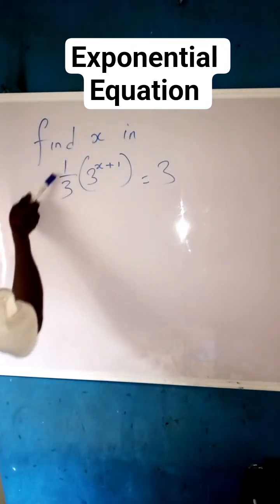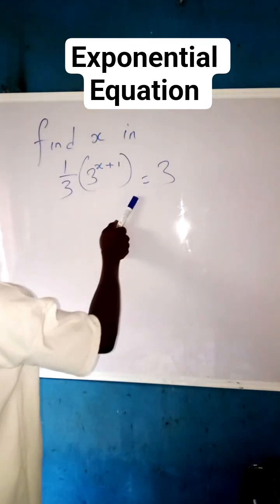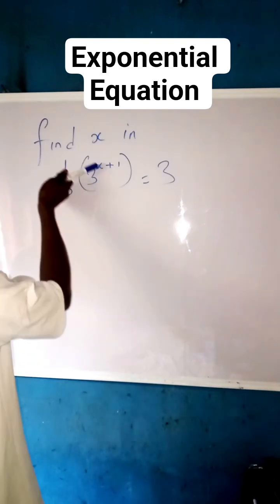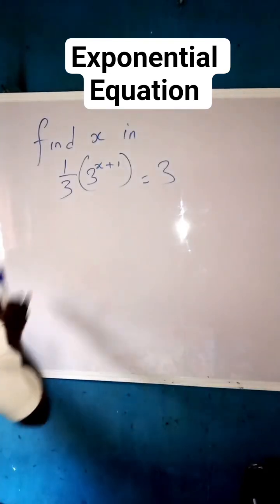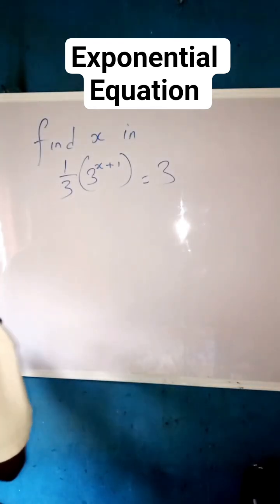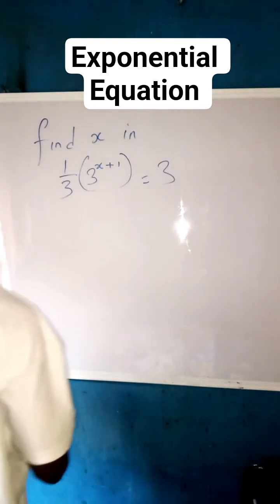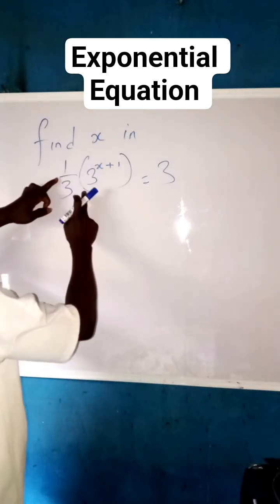Find x in one over three, all in brackets, multiplied by three raised to the power of x plus one, all in brackets, equals three. To get this, just follow along. It's very simple. Let us follow it step by step.